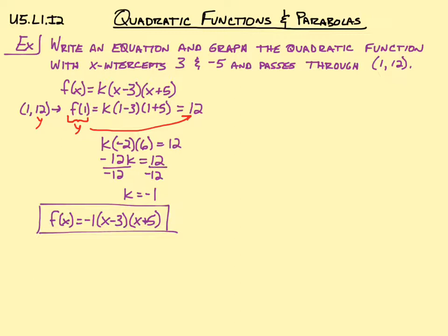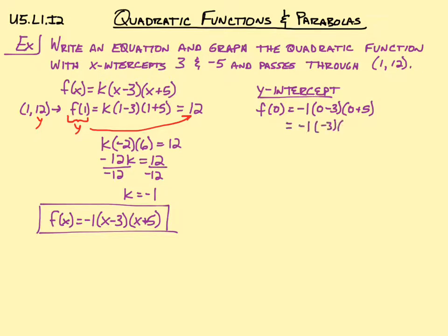We don't quite have enough to graph yet, so we'll find the y-intercept next. The y-intercept is when we plug 0 in for x: negative 1 times 0 minus 3 times 0 plus 5. So f of 0 equals negative 1 times negative 3 times 5, which gives f of 0 equals 15. So our y-intercept is the point (0, 15).